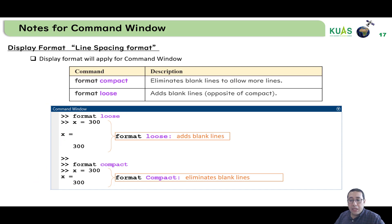For the display format or the line spacing format, the display format will apply for the command window. For format compact, it eliminates the blank lines to allow more space in the command window. And for format loose, it adds a blank line. So for example, if we write format loose and then we write x equals 300, you can see that the echo from MATLAB x equals 300, but we have space here.